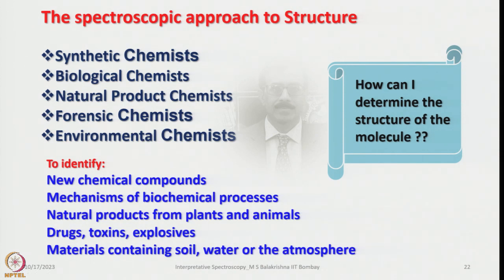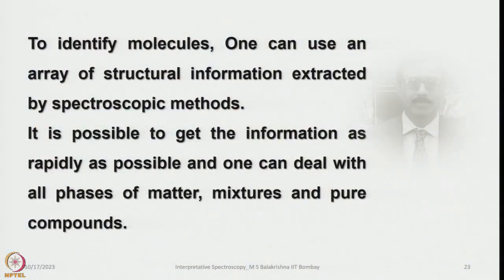How do we approach spectroscopic methods for structure determination, and who does this? Synthetic chemists, biological chemists, natural product chemists, forensic chemists, and environmental chemists all use these methods to identify new chemical compounds, mechanisms of biochemical processes, natural products from plants and animals, drugs, toxins, explosives, and materials in soil, water, or the atmosphere. The spectroscopic approach allows one to use an array of structural information extracted from all spectroscopic methods rapidly, and can deal with all phases of matter — mixtures and pure components. Many spectroscopic methods allow analysis of samples in their own state: solid, liquid, or gaseous.